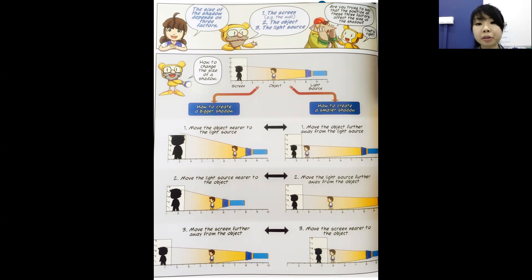Moving on, let's see how to create a smaller shadow. We move the object further away from the light source or move the light source further away from the object. Simply put, we are increasing the distance between the object and the light source to get a smaller shadow. The second way to get a smaller shadow is to move the screen closer to the object.